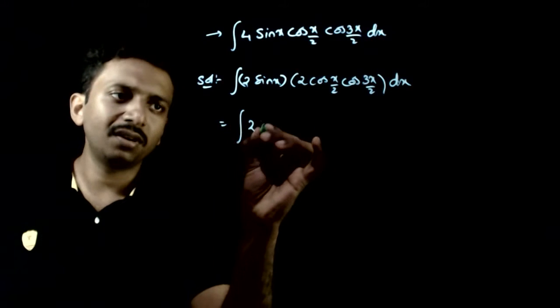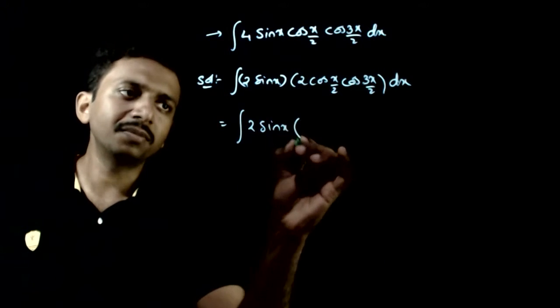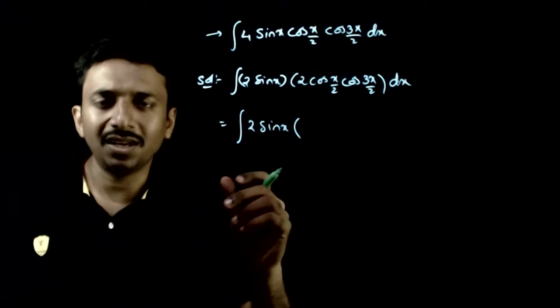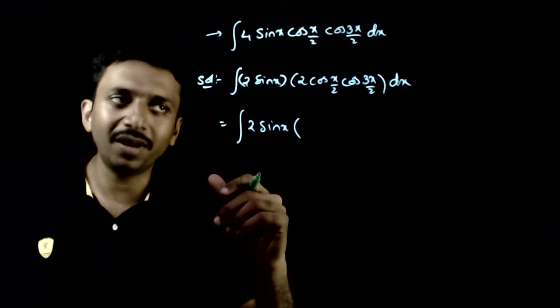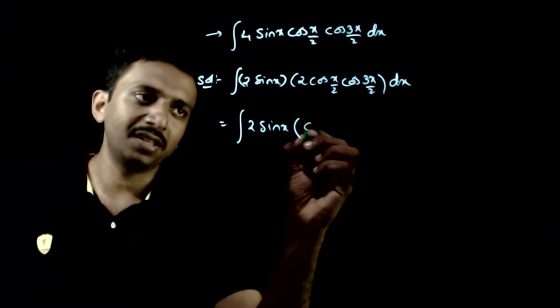Now what I do is, I take 2 sin x separately. So, 2 cos a cos b can be written as cos a plus b plus cos a minus b.